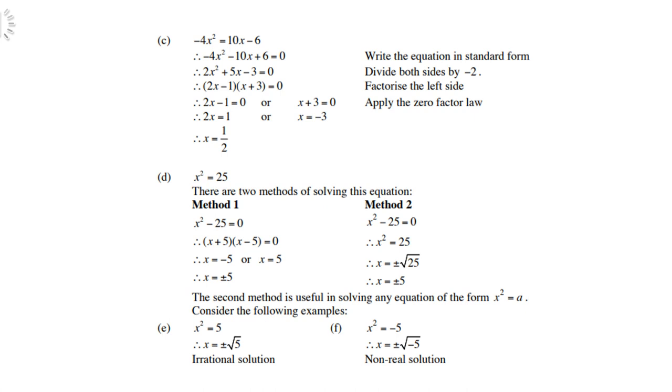Example D: x² = 25. There are two methods. Method 1: Take 25 to the left-hand side and factorize as a difference of squares: x² - 25 = 0, so (x + 5)(x - 5) = 0, therefore x = ±5. Method 2: Find the square root on both sides: x = ±√25 = ±5. The second method is useful for solving any equation of the form x² = a.